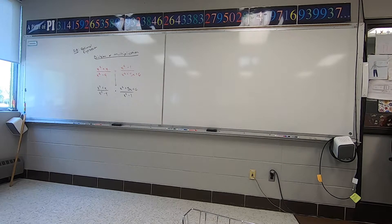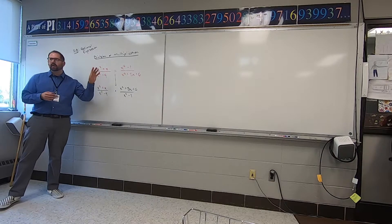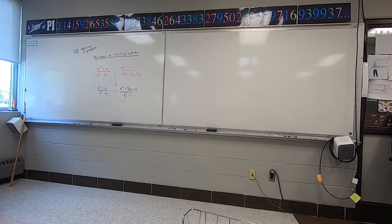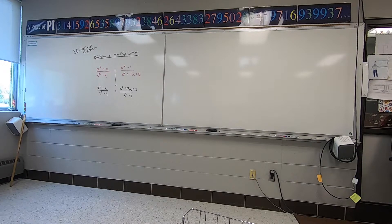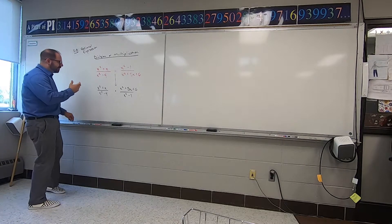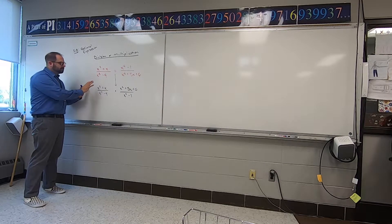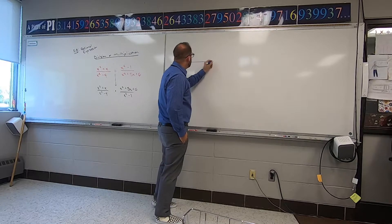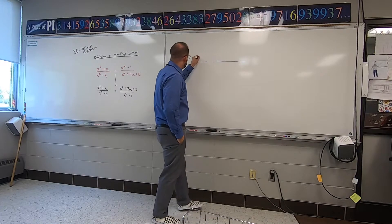At this point, what we need to do next is we need to factor. On multiplication or division problems, you have to factor everything — top, bottom, right, left, everything. We need to go through all the rules: common factors, trinomials, difference of squares, cube rules, grouping, whatever you have. Let's start in the upper left corner.